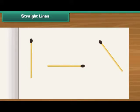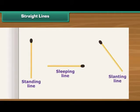Horizontal matchsticks make sleeping lines. Vertical matchsticks make standing lines. Slanting matchsticks make slanting lines.